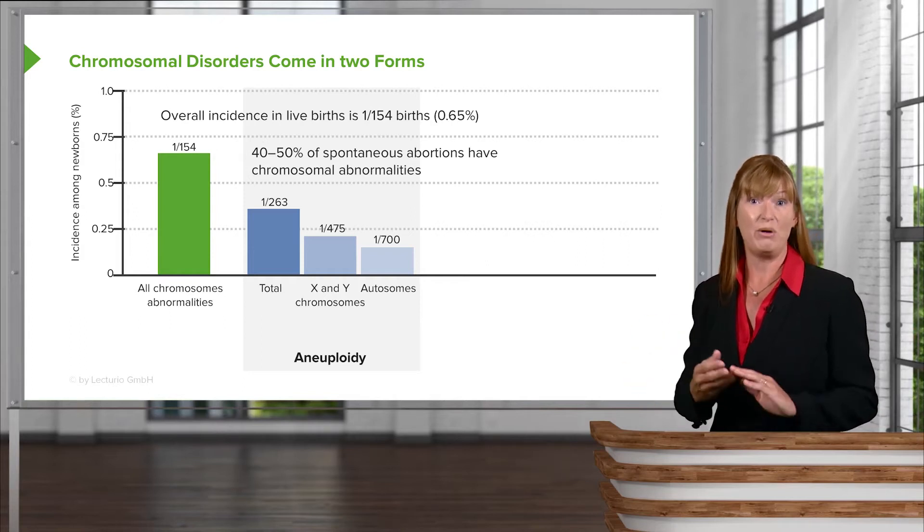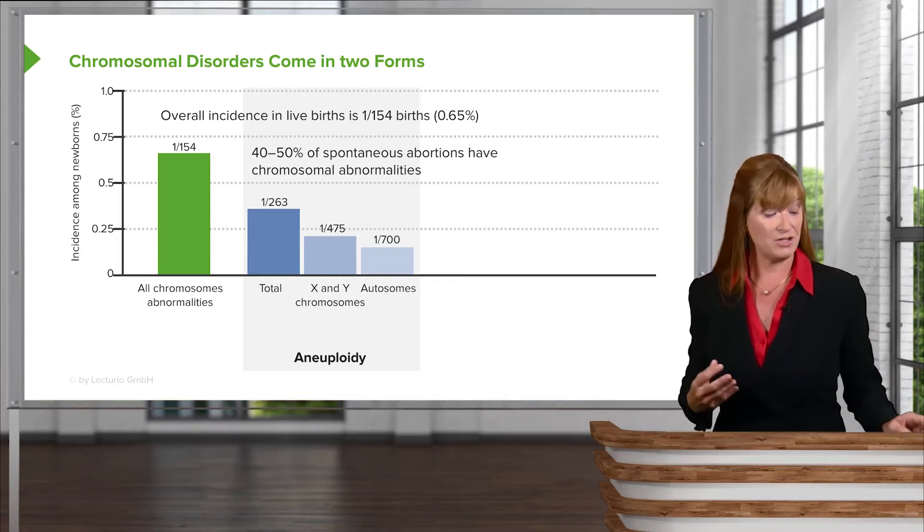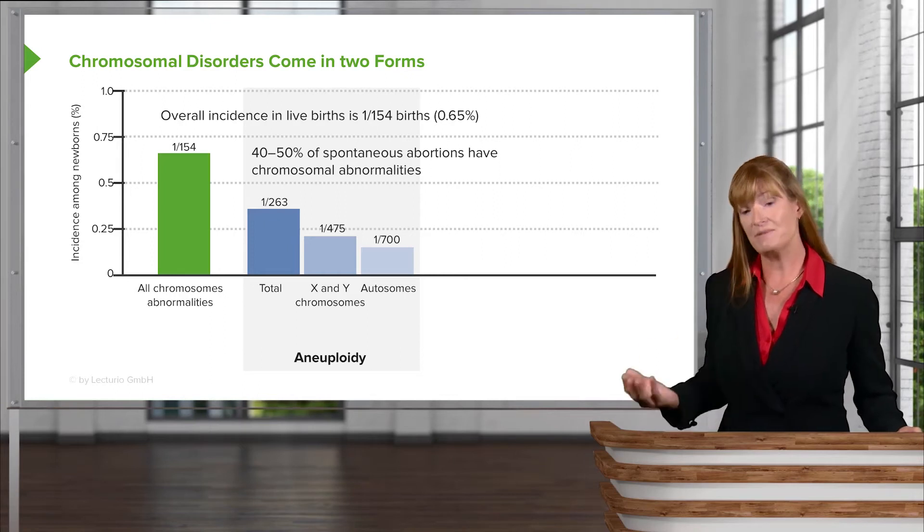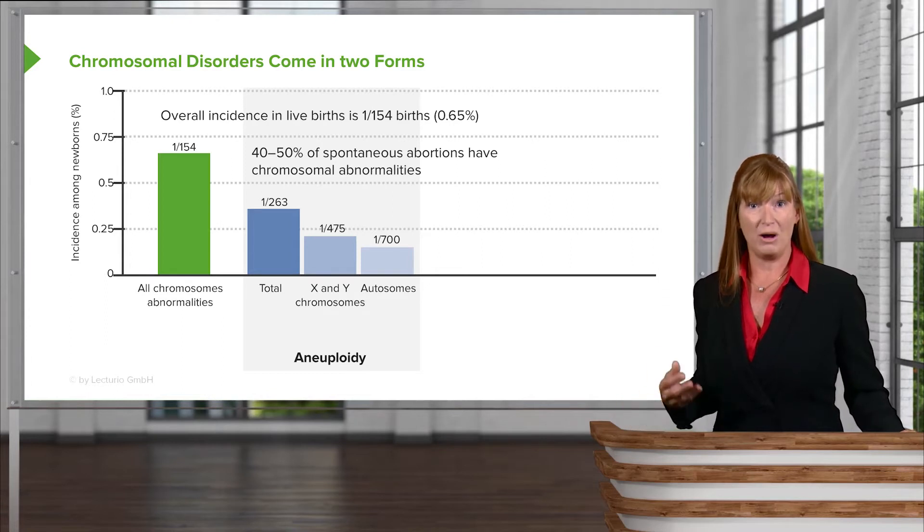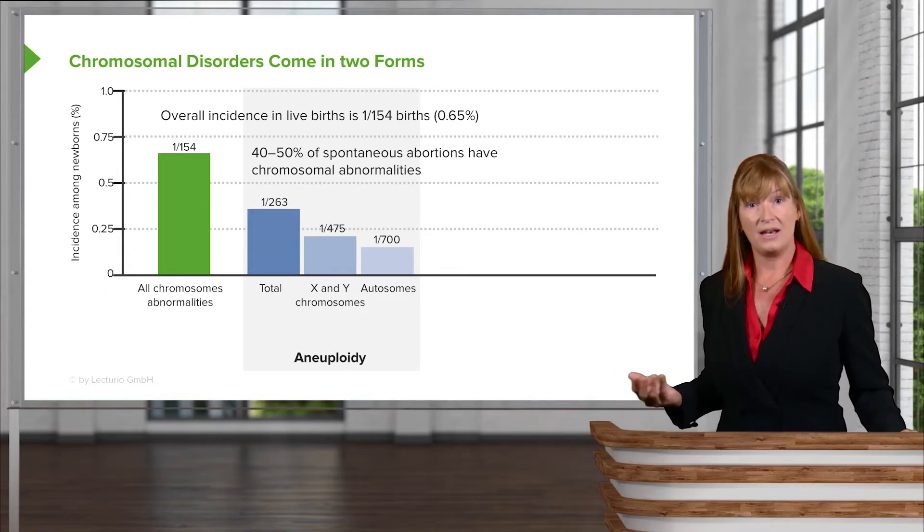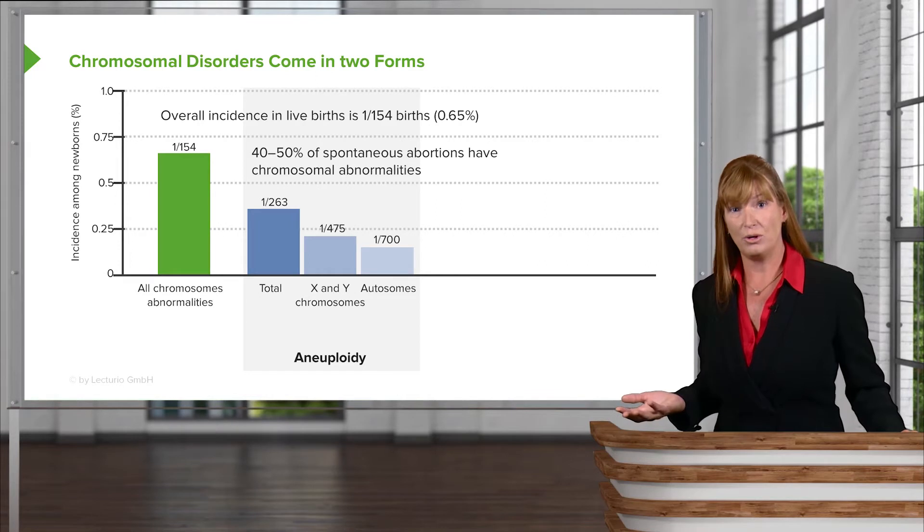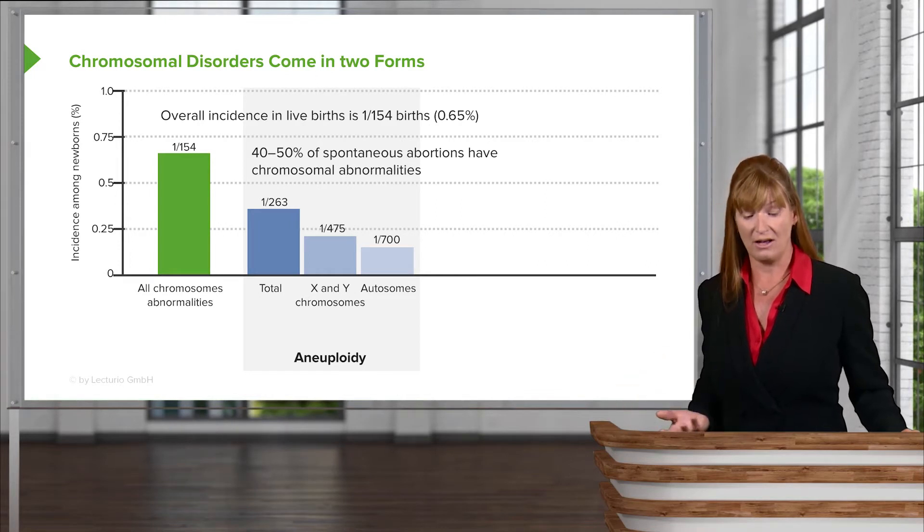Another term we might use is polyploidies for additional chromosomes. And we'll spend some time in this lecture looking at how aneuploidies come about or polyploidies come about. And specifically we'll explore Down syndrome in quite a lot of detail.